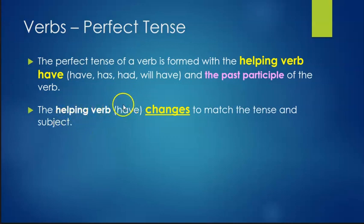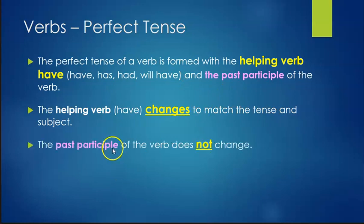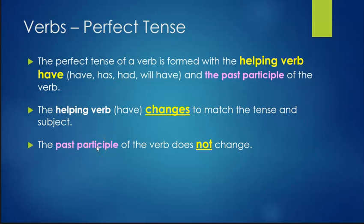The helping verb have changes to match the tense and the subject. So whether it's present perfect, past perfect, or future perfect, we're going to change the form of have. The past participle does not change — regardless of your main verb, you use the past participle form, which is the last column, the fourth column on the verb chart.